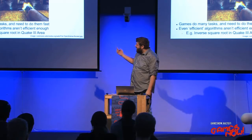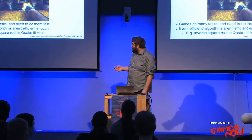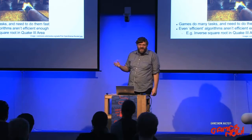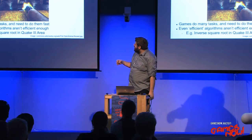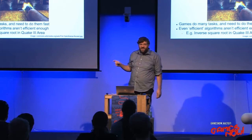So even something that a computer scientist might call efficient might not be efficient enough. For example, doing one divided by the square root of a number is something that doesn't take that long - a computer scientist would probably say that's an efficient thing to do. But in Quake 3 Arena, they had to do a lot of it in a very short space of time to render the graphics, and it was too slow.